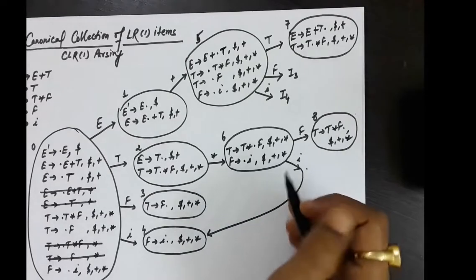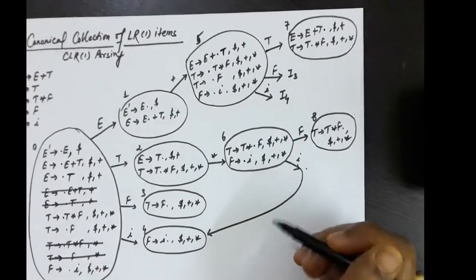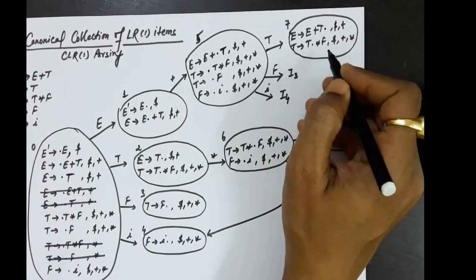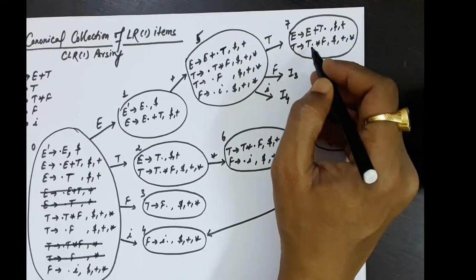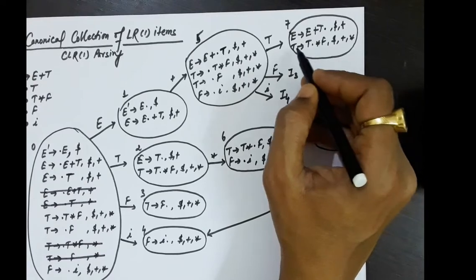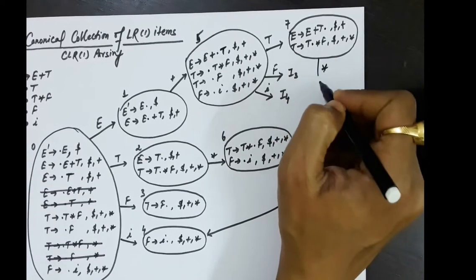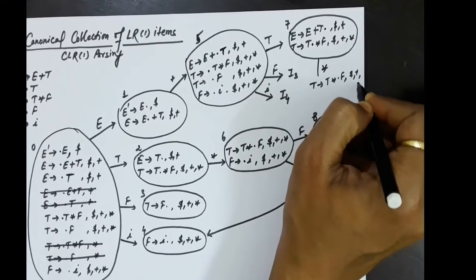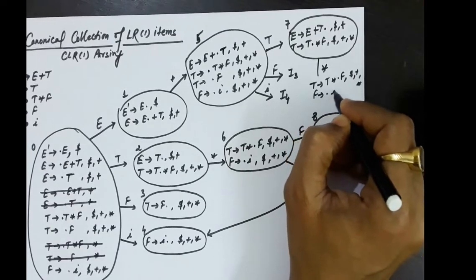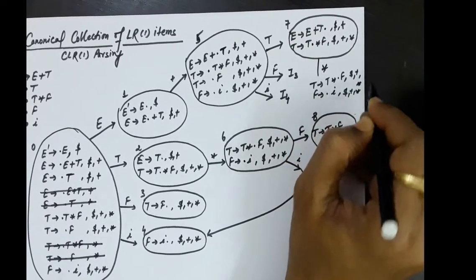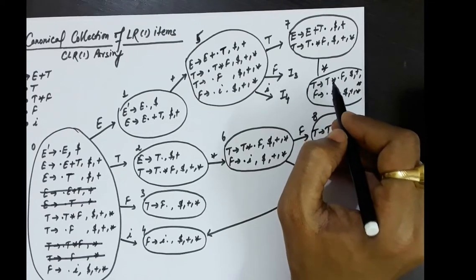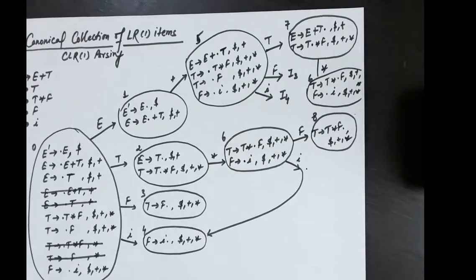From state 7, taking star leads to T produces T star dot F with lookaheads dollar, plus, and multiplication, plus all productions starting with F with the same lookahead — this is the same collection as state 6. So we have seen all productions and all transitions, and we are now ready for making the table.